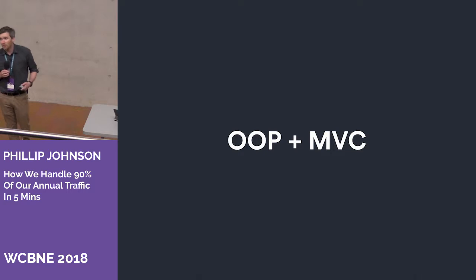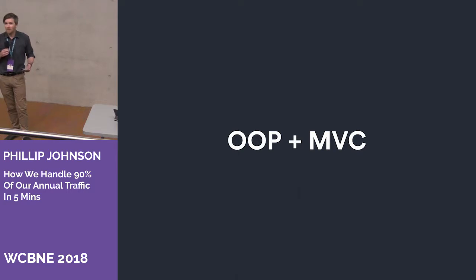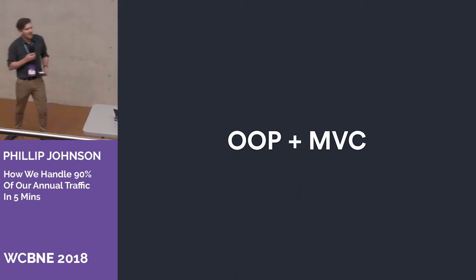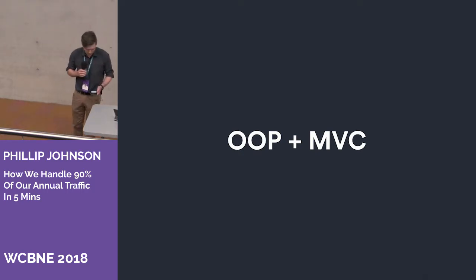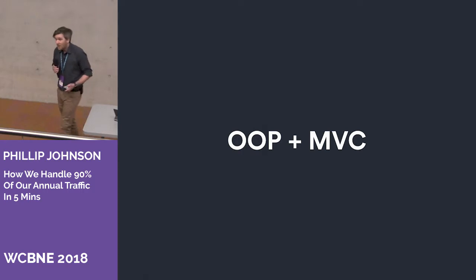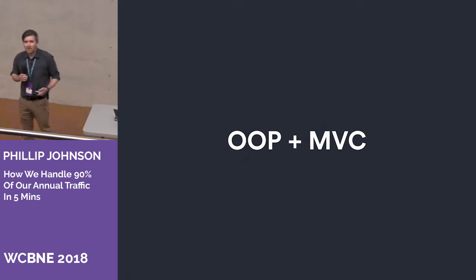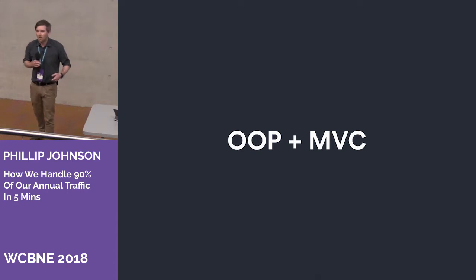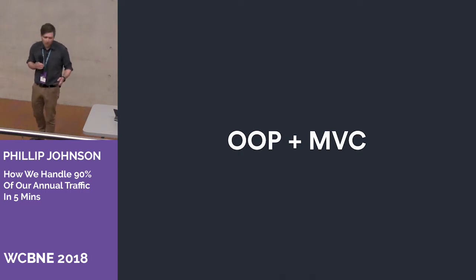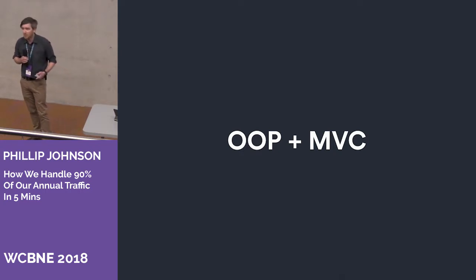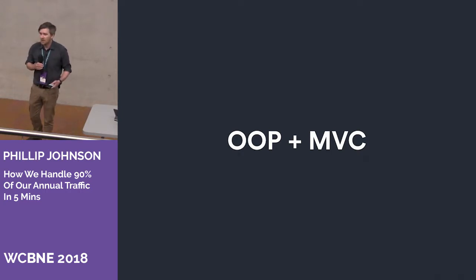My solution was to build the theme using object-oriented programming and MVC — Model View Controller. For those not familiar, MVC splits out the logic: you've got your HTML markup in one section, you set up your models which handle the data between the database, and then you've got a controller which says get this data and put it on this page. It's super important to have a setup like that, particularly if you're working with multiple developers, because you can have one person working on the view, one person working on the data, and when you store it in your Git there are no conflicts.